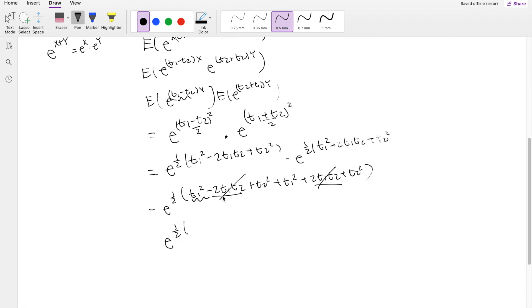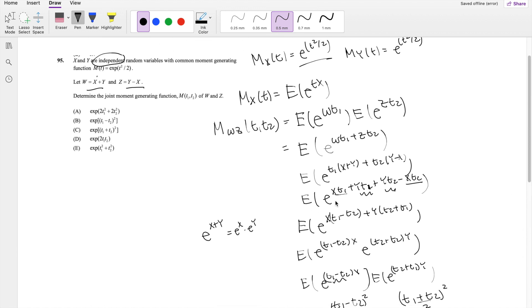And you get E to the one half. And T1 squared, there's actually two of them. So 2T1 squared plus, and then there's also two of the T2 squared as well, 2T2 squared. So this is finally equal to E to the value of T1 squared plus T2 squared, which is our answer E.